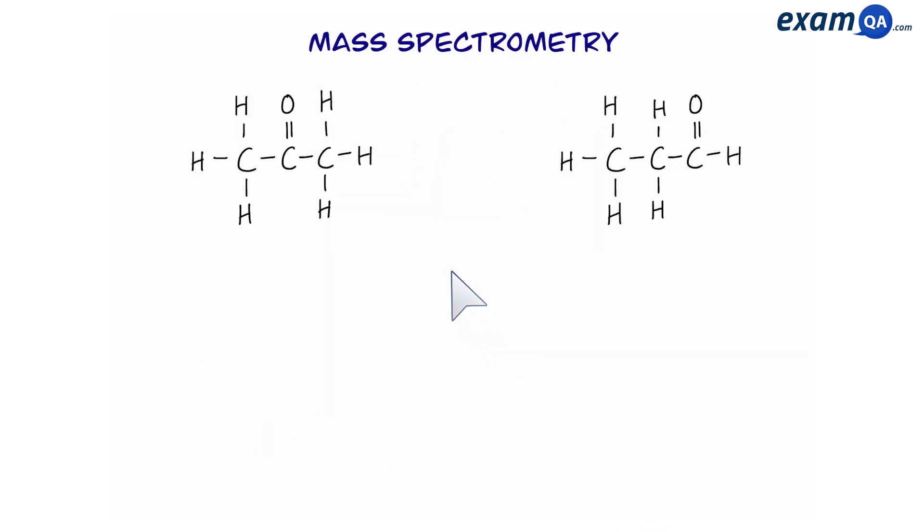Another interesting use of mass spec is to distinguish between two different compounds that have the same molecular ion peak. Both propanone on the left and propanol on the right have the same relative formula. So, does that mean we cannot distinguish between them? Yes, we can, and to do that we will use fragments.